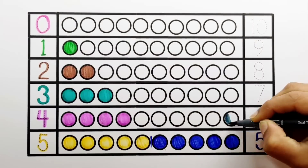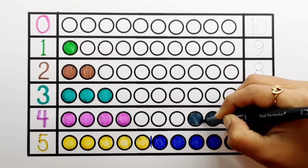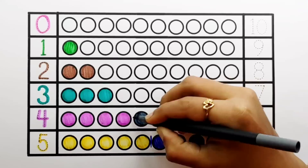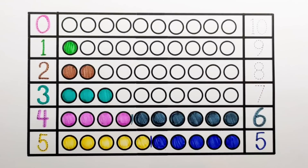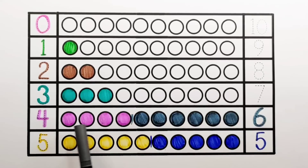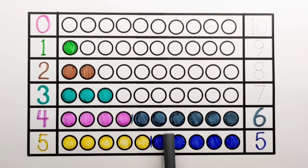Number 6. 1, 2, 3, 4, 5, 6 — 6 balls. 4 plus 6 makes 10. 1, 2, 3, 4, 5, 6, 7, 8, 9, 10. 4 plus 6 equals 10.